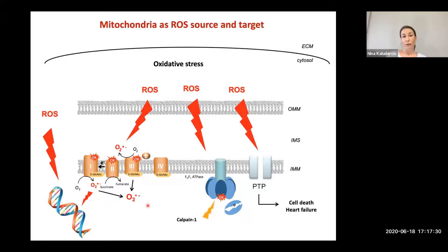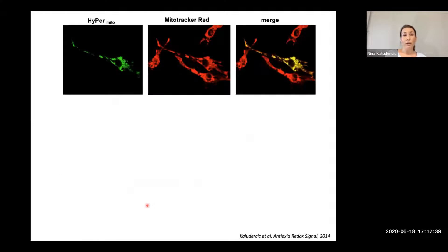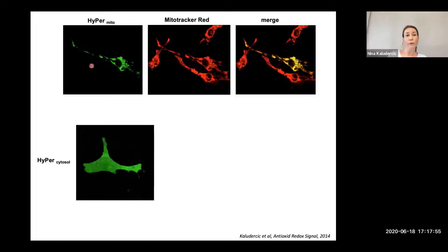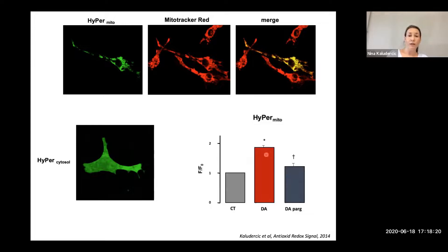The question that arose naturally was whether MAO activity can directly target mitochondria to affect mitochondrial function. We looked at whether ROS are actually being formed in the mitochondria. Since MAO is at the outer mitochondrial membrane, we employed the genetically encoded H2O2-sensitive probe HYPER, targeted either to mitochondria or the cytosol. When we stimulated MAO activity with dopamine, we saw a rapid increase in the HYPER ratio in the mitochondrial compartment compared to the cytosol. When we blocked the enzyme, we could prevent this increase.